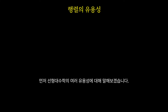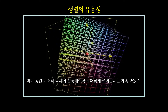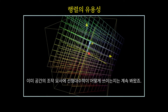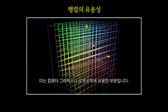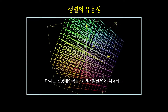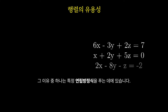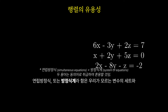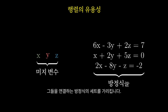First, a few words on the usefulness of linear algebra. By now, you already have a hint for how it's used in describing the manipulation of space, which is useful for things like computer graphics and robotics. But one of the main reasons that linear algebra is more broadly applicable and required for just about any technical discipline is that it lets us solve certain systems of equations. When I say system of equations, I mean you have a list of variables — things you don't know — and a list of equations relating them.